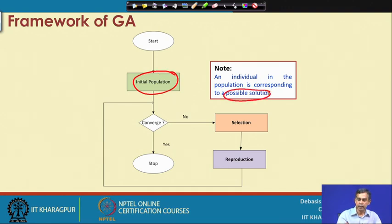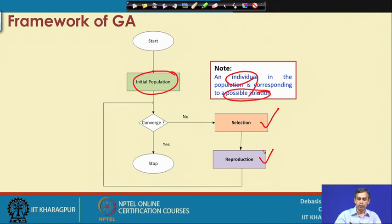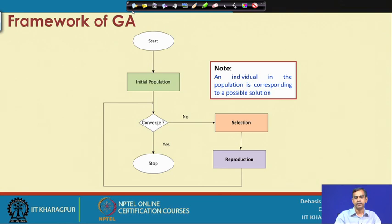To understand the genetic algorithm we need to understand how the initial population can be generated — that is, how a possible solution is converted to an individual — and how the selection and reproduction operations can be realized. We will learn all these things in subsequent lectures, starting with the framework of GA and its variations.